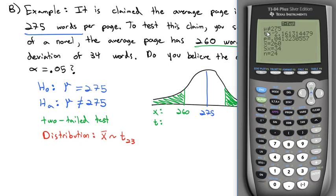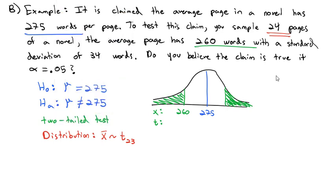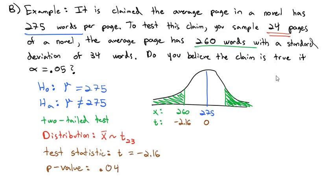When we do that, the calculator gives us several things, but what we're interested in most is t and p. T, the test statistic, is negative 2.16, and p, the probability the null hypothesis is true given our sample, is 0.0413. Our test statistic is t equals negative 2.16, which we can add to our picture to the left of 0, and the p-value is 0.0413.